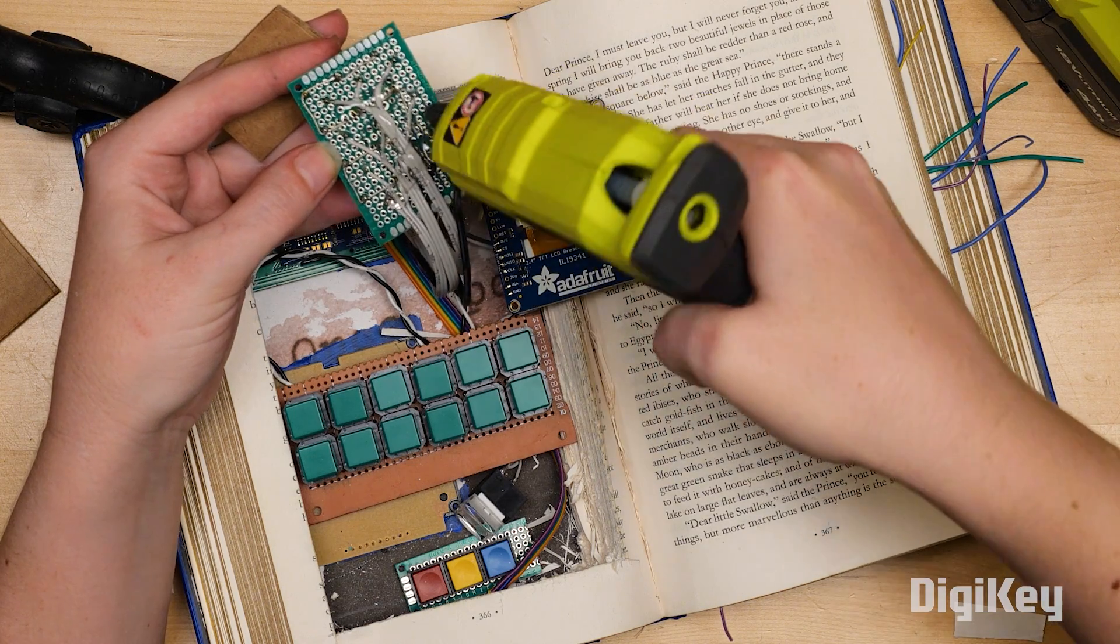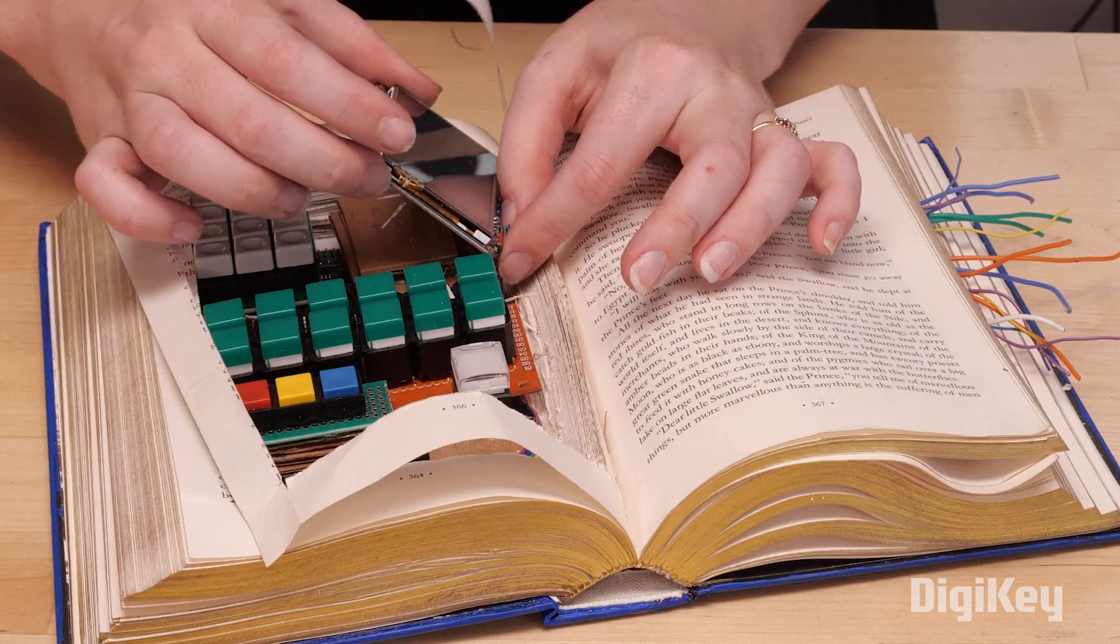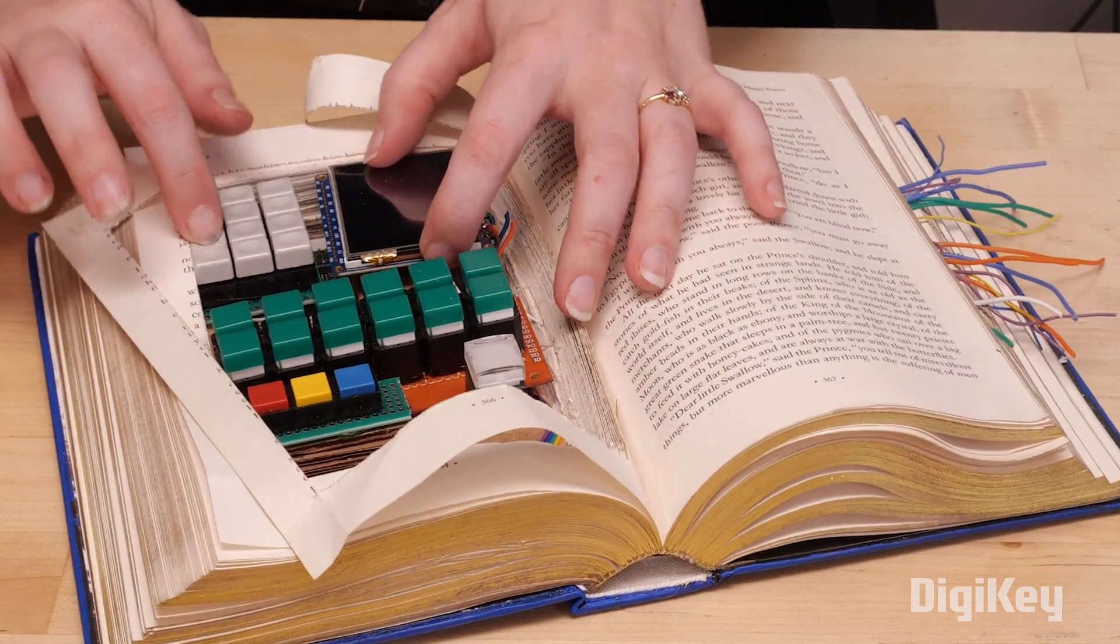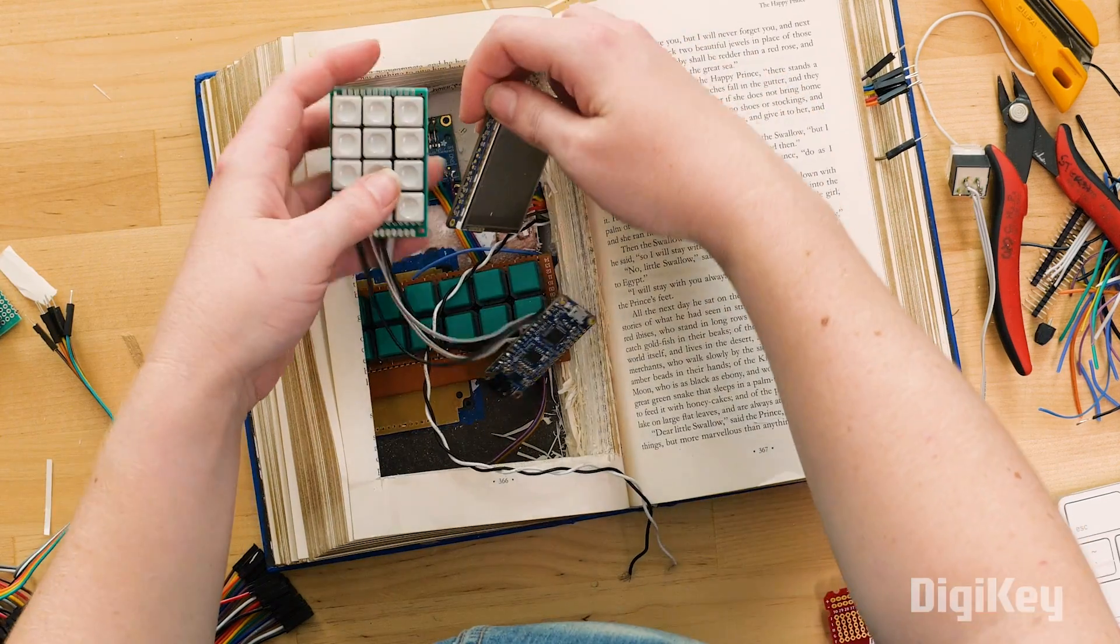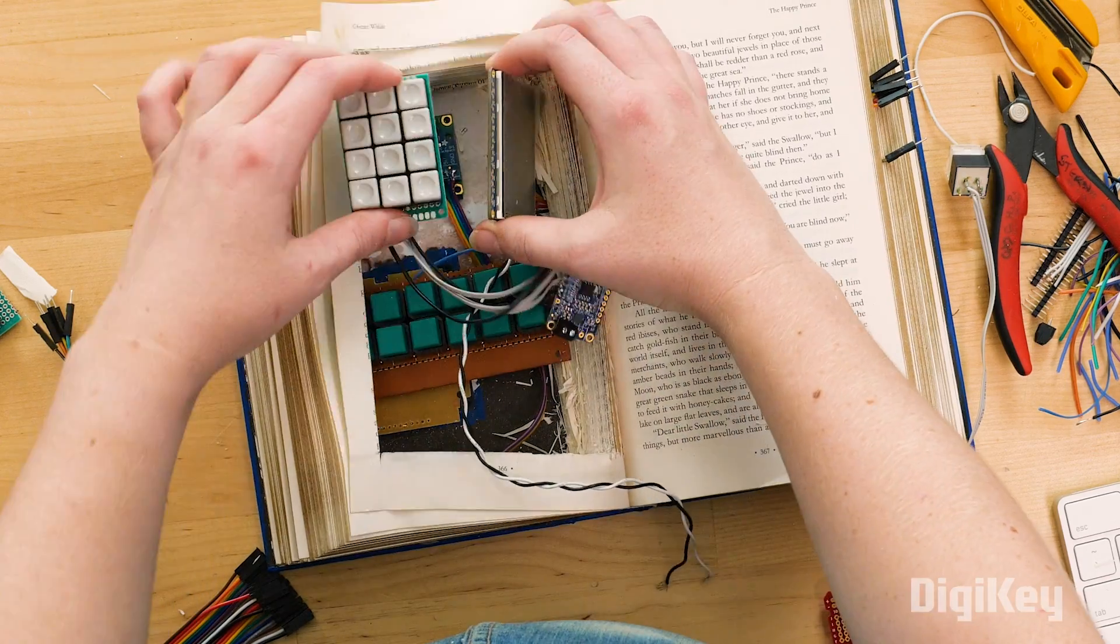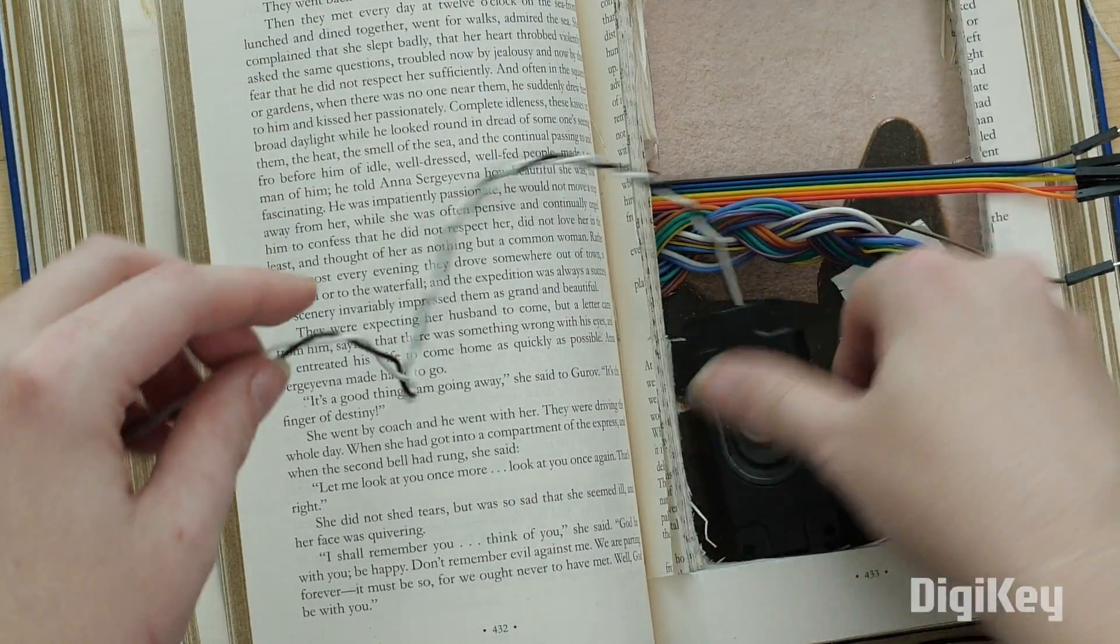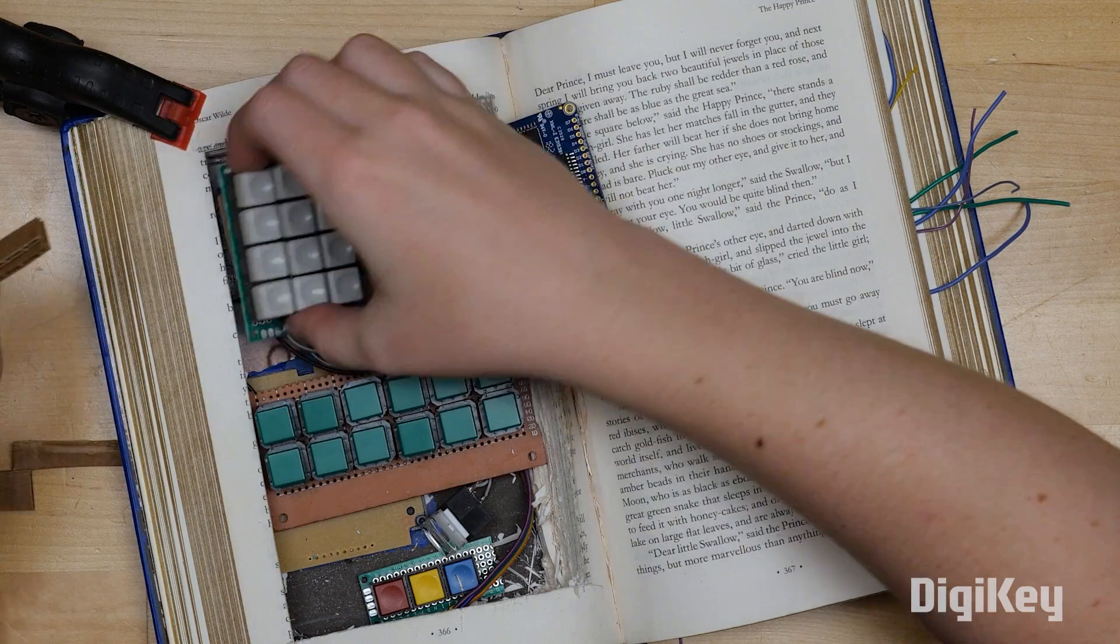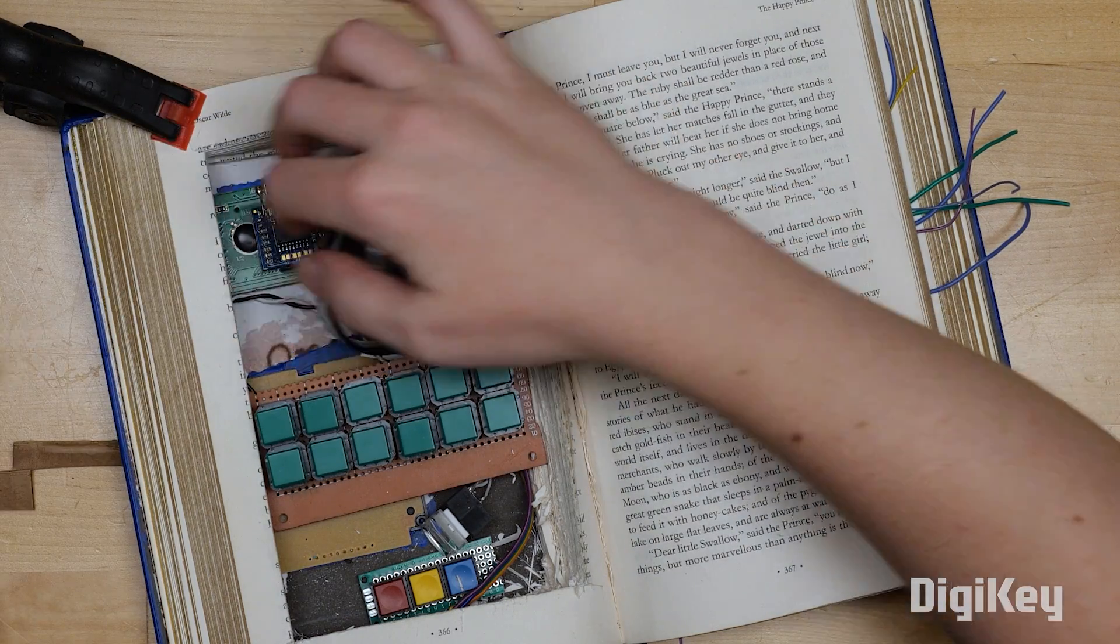Next, it was time to install the other tested components into the book. I soldered stranded wires to a TFT display and threaded them to the right side of the book. I connected the grey button panel to an audio FX board loaded with sounds from the show, and installed the speaker in the right side of the book.